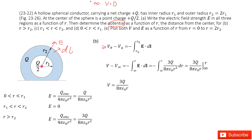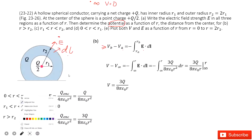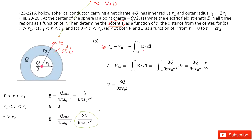For the first part, we find the potential where R is larger than R2. Drawing from infinity to this location, the electric field in this region covers just the term for r greater than R2. So we integrate E times DR from infinity to R, and we get the final answer that looks like this one.